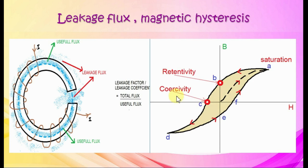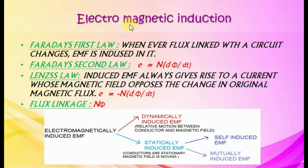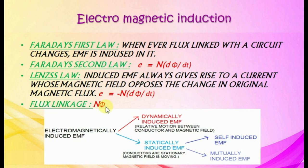Electromagnetic induction. Faraday's first law: whenever flux linked with a circuit changes, EMF is induced in it. Faraday's second law gives the equation: E equals N times d-phi by dt. Lenz's law gives direction: induced EMF always gives rise to a current whose magnetic field opposes the change in original magnetic flux — hence EMF has a negative sign. Flux linkage is N phi. Induced EMF is classified into dynamically induced EMF and statically induced EMF.